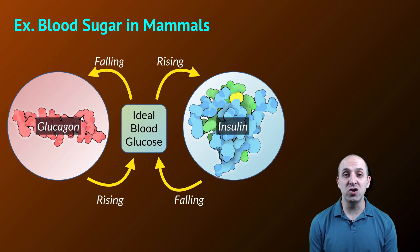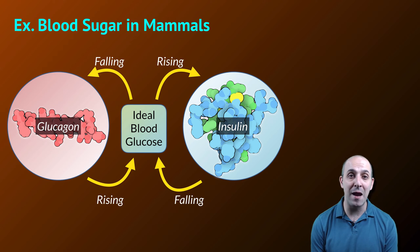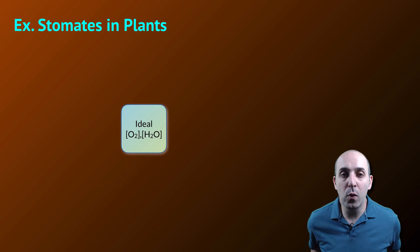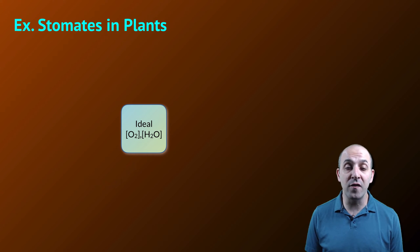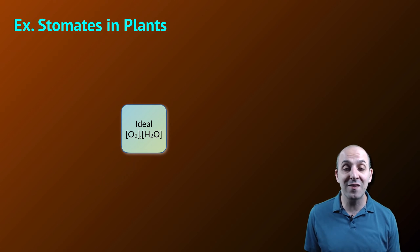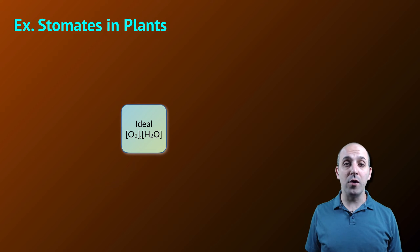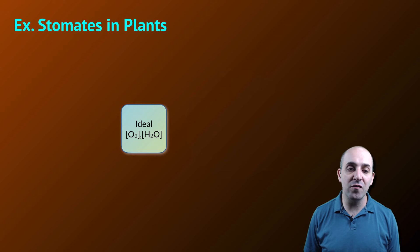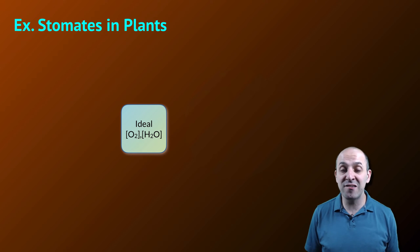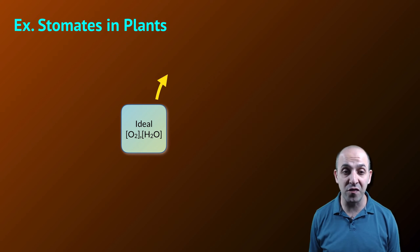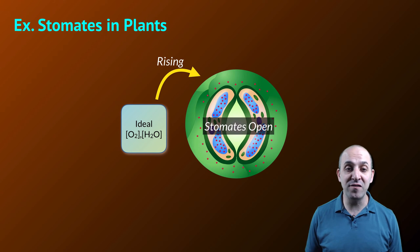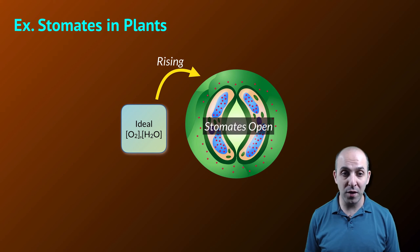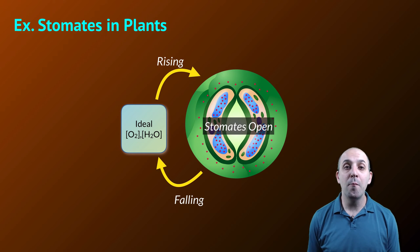This is a classic negative feedback relationship and a classic example of homeostasis in mammals. If we want one from plants, we can look at the action of stomates — the microscopic holes on the leaves of plants involved in regulating the concentrations of respiratory gases and water inside of the plant. It's good to think about ideal physiological set points. The ideal concentrations of oxygen and water vapor are necessary for the plant to carry out respiration and photosynthesis. As those concentrations rise above the set point, the stomates on the leaf will open and cause those substances to leave the leaf, bringing the internal conditions of the plant back to the set point.